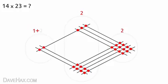In this case, 2 dots, giving us a total of 3. And that gives us our answer. 3, 2, 2. 14 multiplied by 23 is 322.